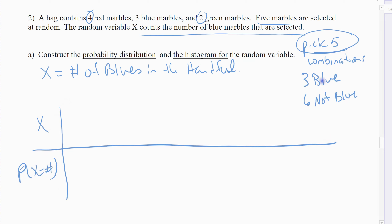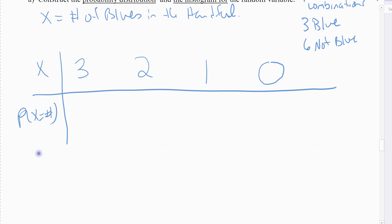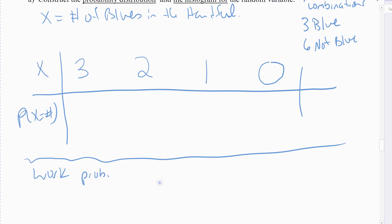I'll set up the probability distribution with X across the top and P(X = number) below. The possible values of X are 0, 1, 2, and 3. I can have 3 blues (needing 2 non-blues), 2 blues (needing 3 non-blues), 1 blue (needing 4 non-blues), or 0 blues — all 5 from the red and green, which is possible since there are 6 non-blue marbles. I'll start with the easier all-or-none cases.